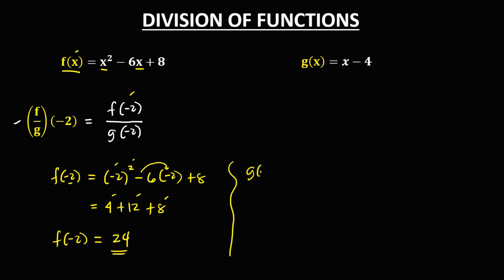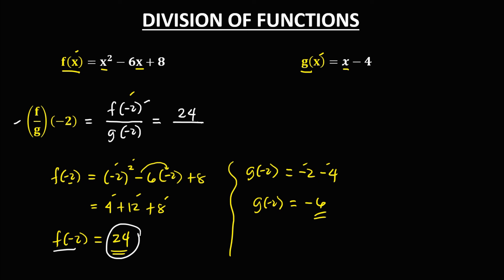For g(negative 2), substituting x equals negative 2 into g(x): we have negative 2 minus 4, so g(negative 2) equals negative 6. Now substituting both values: f(negative 2) over g(negative 2) is 24 over negative 6. Simplifying, 24 divided by negative 6 equals negative 4. So the quotient of f(negative 2) over g(negative 2) is negative 4.